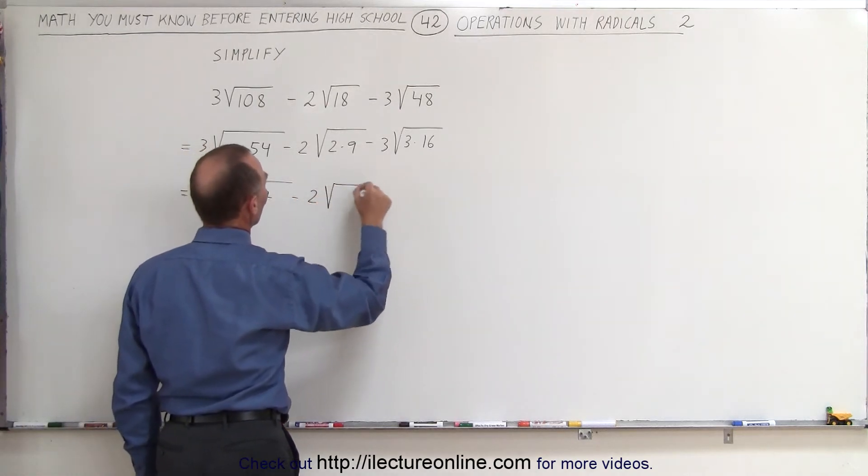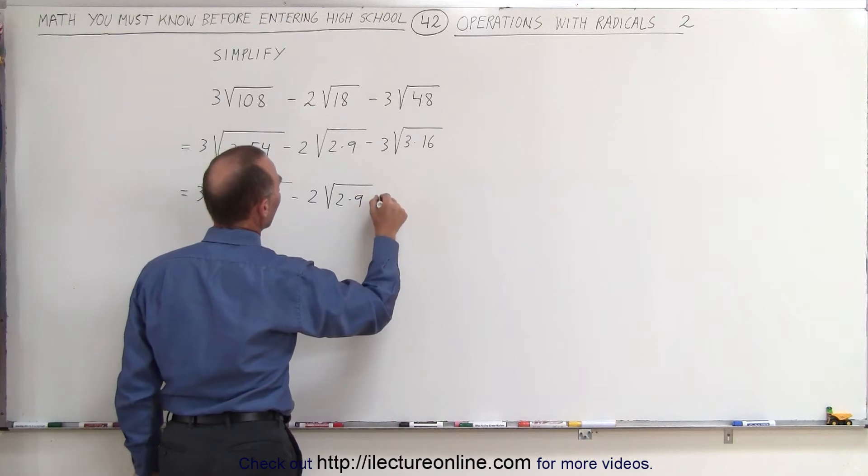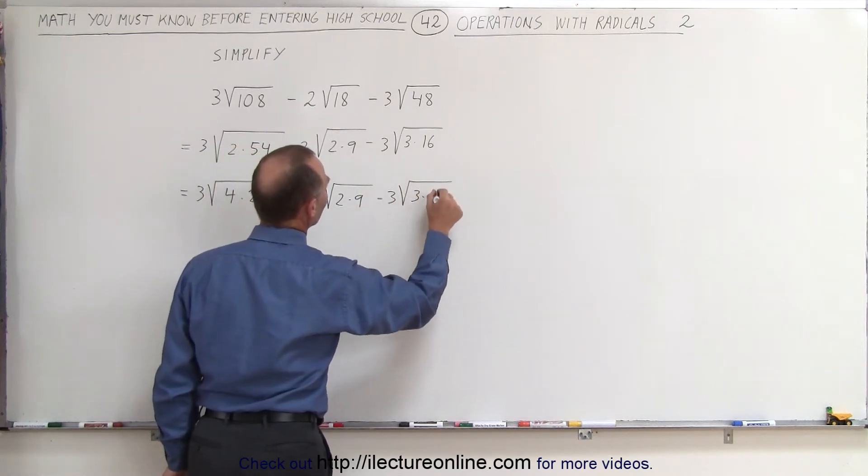Minus 2 times the square root of 2 times 9 minus 3 times the square root of 3 times 16.